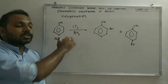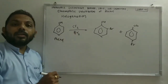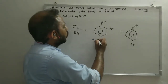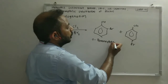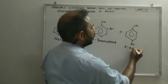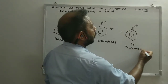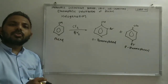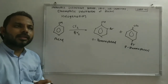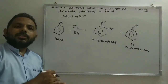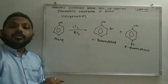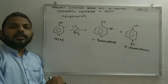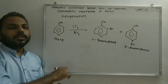When phenol reacts with bromine in the presence of less polar solvents like carbon disulfide or chloroform, we get two products: ortho-bromophenol and para-bromophenol. Normally halogenation requires FeCl3 or FeBr3 as a Lewis acid, but in the case of phenol, which is self-activated because of resonance at ortho and para positions, we do not need FeCl3 or FeBr3 for bromination or chlorination.